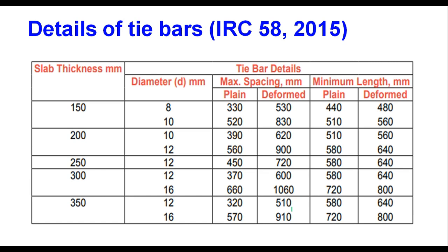Details of tie bars as given in IRC 58: depending upon the slab thickness, you can choose the diameter from the table along with the maximum spacing for plain or deformed bars and the minimum length required for plain or deformed bars.